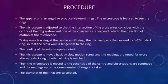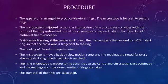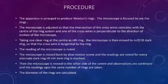Procedure: The apparatus is arranged to produce Newton's rings. The microscope is focused to see the rings. Then the microscope is adjusted so that the intersection of the cross wires coincides with the center of the ring system, and one of the cross wires is perpendicular to the direction of motion of the microscope.